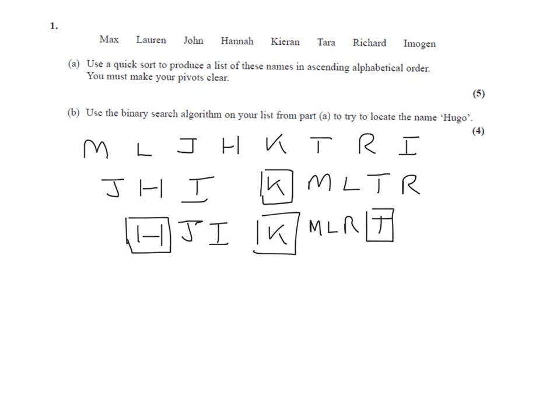Now we apply the algorithm again to the sub-lists. We've still got two, we've got this one, J and I, and M, L, R. So the midpoint is there, so we take the item to the right of the midpoint. So H has already been a pivot, I is the new pivot.